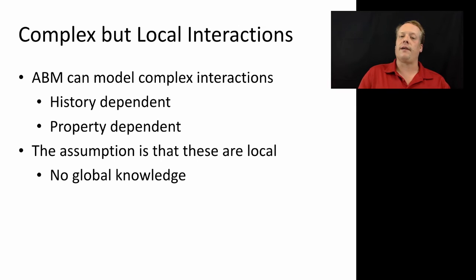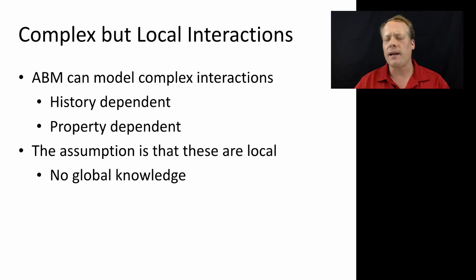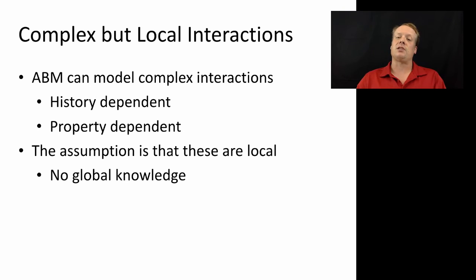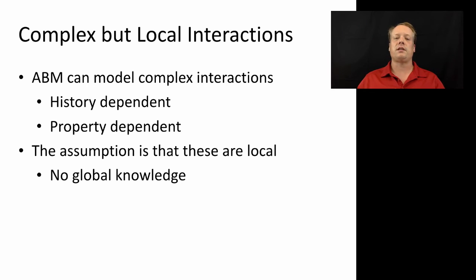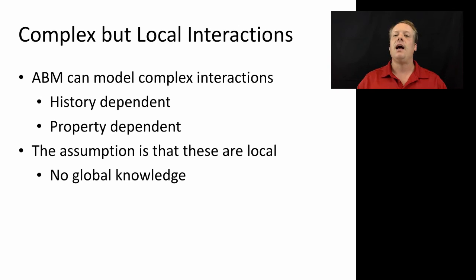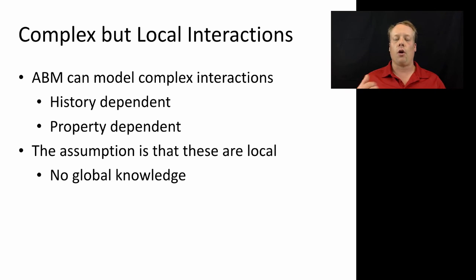Complex but local interactions. Agent-based modeling can model very complex interactions between individuals, and the fact that it can model interactions between individuals — especially since those interactions happen over time — is important for representing complex systems. Those interactions can also be history-dependent. For instance, if you have two agents in a system, they can know the past history of how they interacted, and that can be used to determine how they might interact in the current interaction, whereas many other systems would ignore past history and just assume the current state of the world.